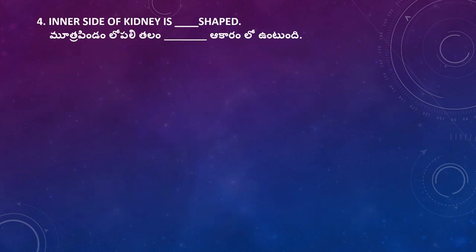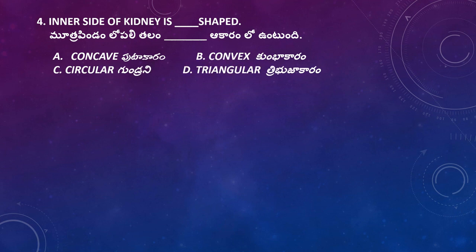Question: The inner side of the kidney is dash-shaped. Options: Concave, Convex, Circular, Triangular. If your answer is Concave, it is the right one. The inner side of the kidney is concave-shaped, and the hilus (fissure) is also present there.